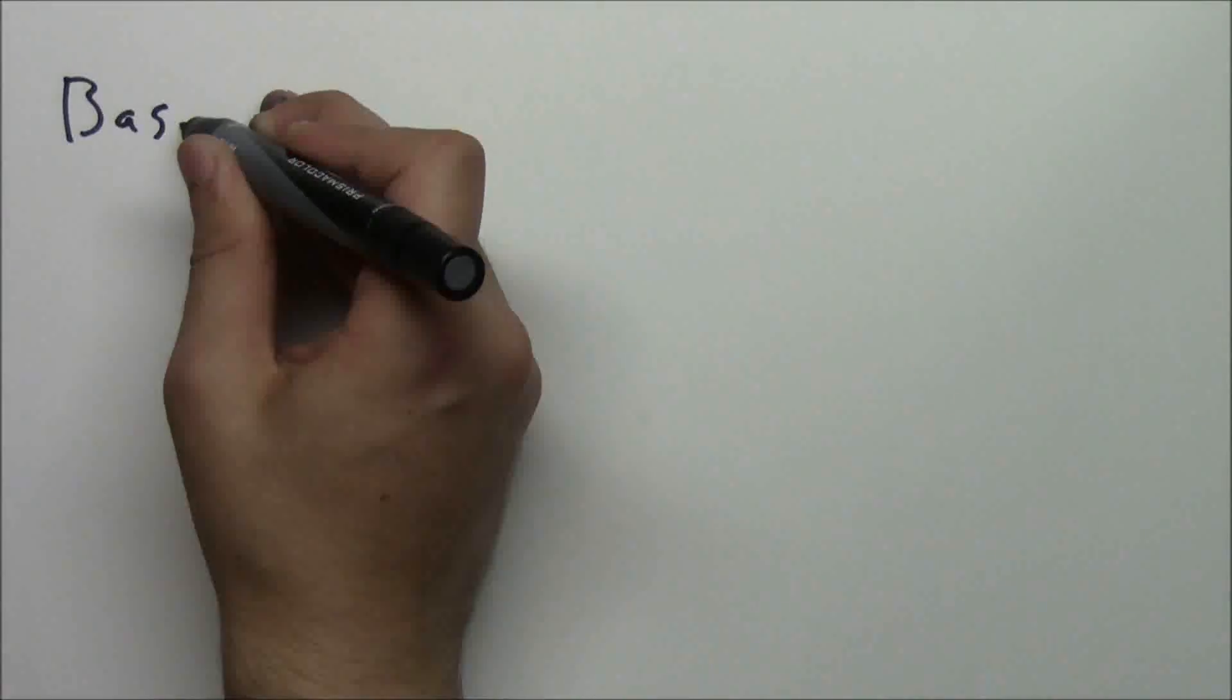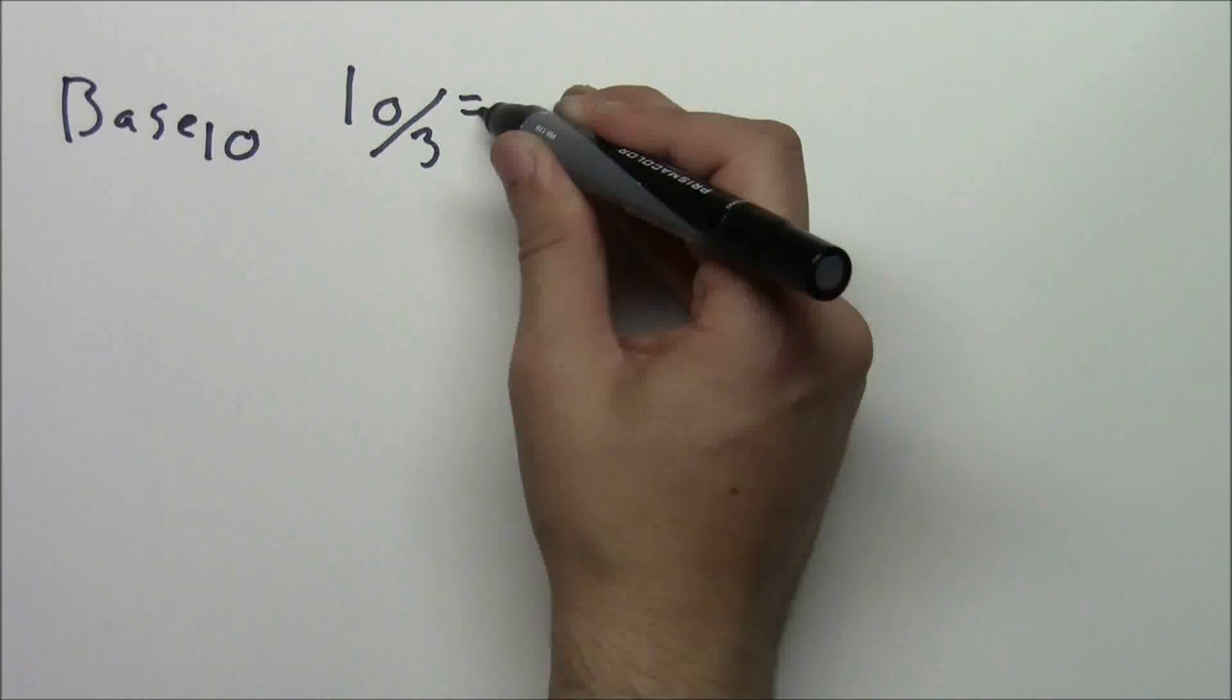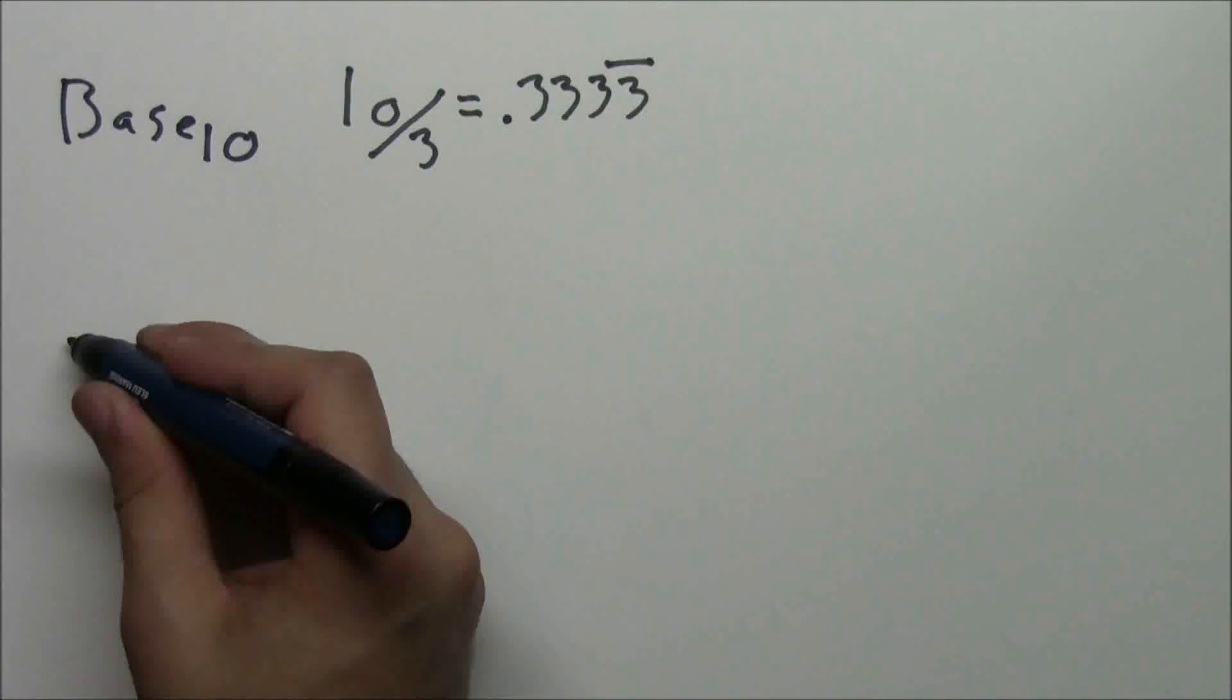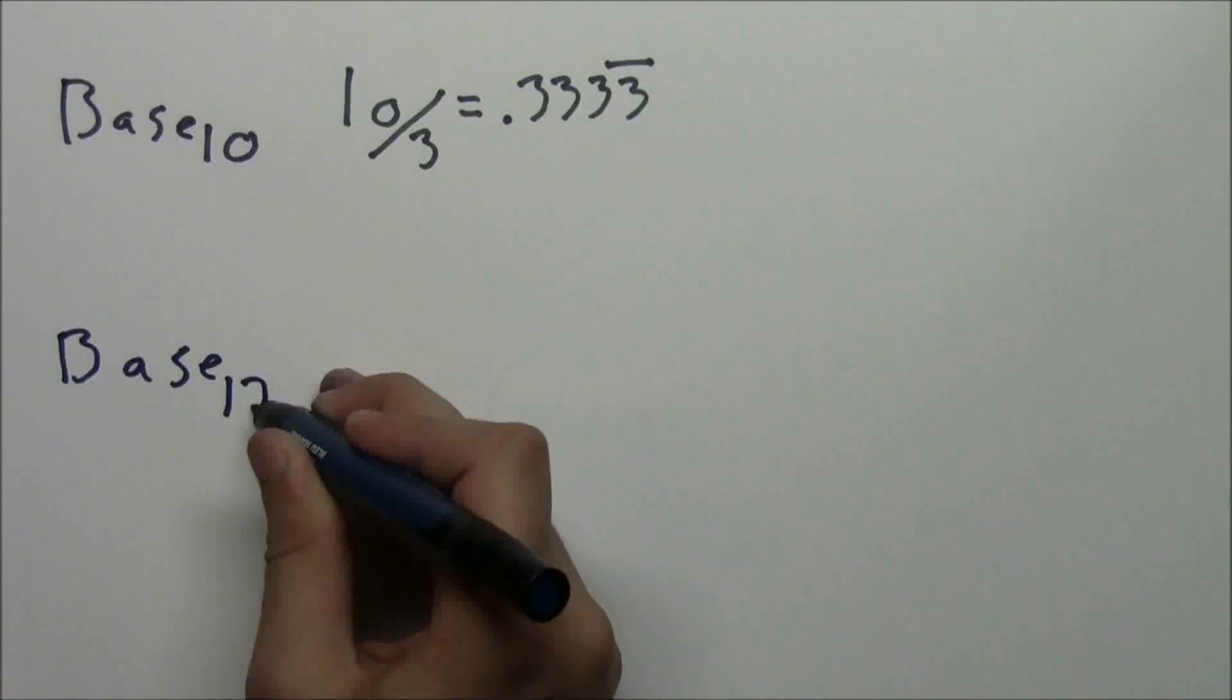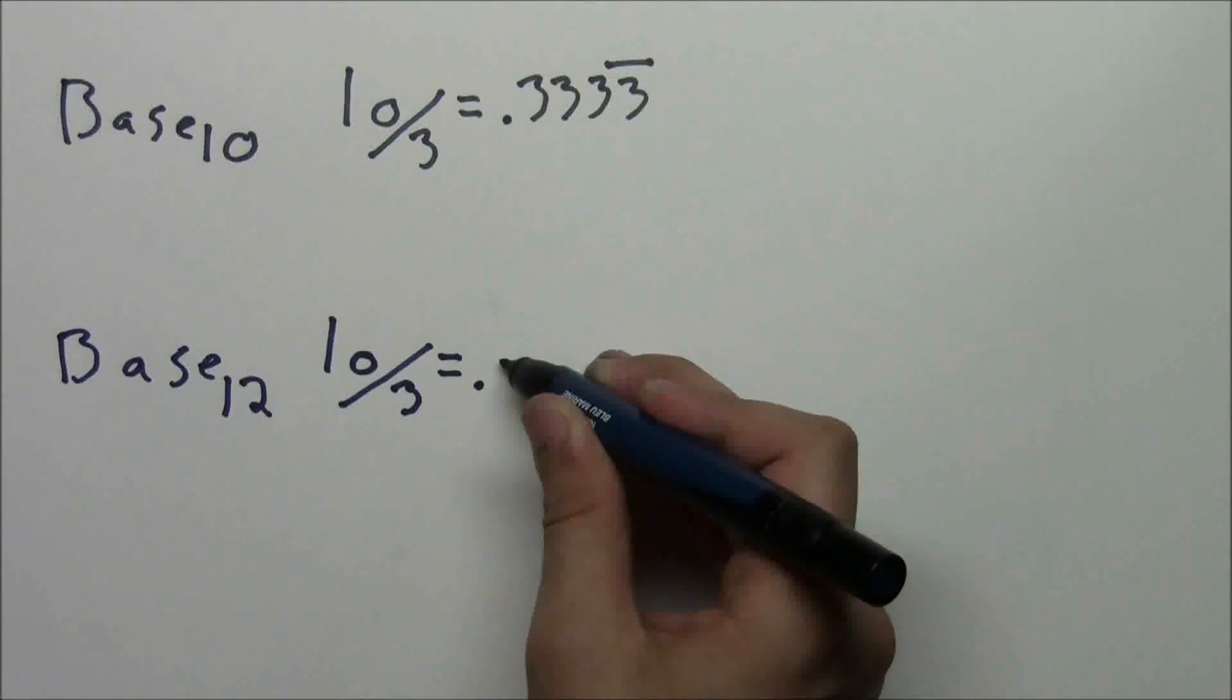Like in decimal, 10 divided by 3 is 0.3333 repeating on forever, which is a mess. Whereas in doznal, it's 0.4. No repeating digits or anything. And so this makes things like division so much easier.